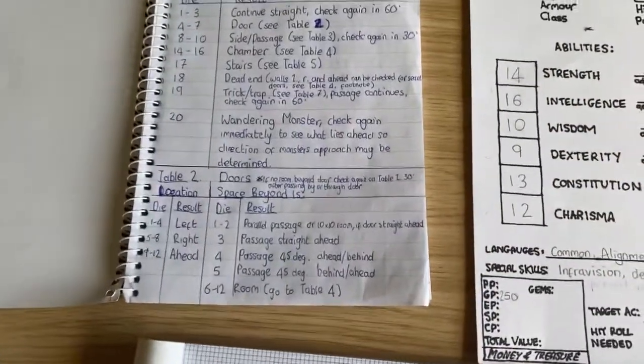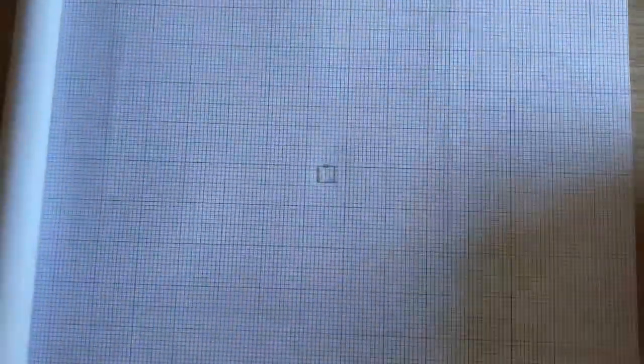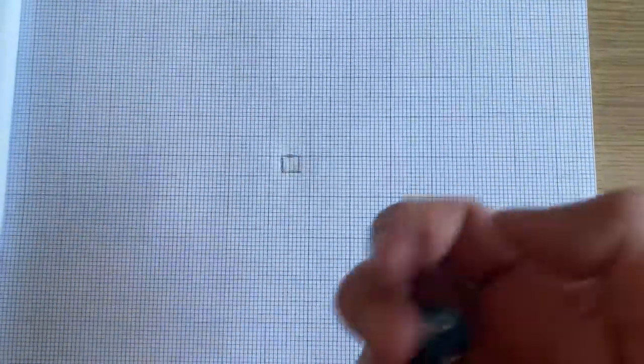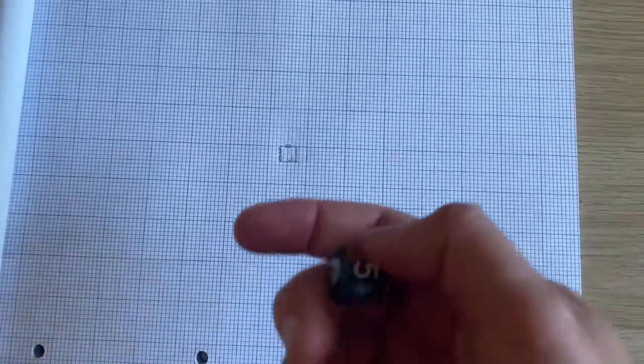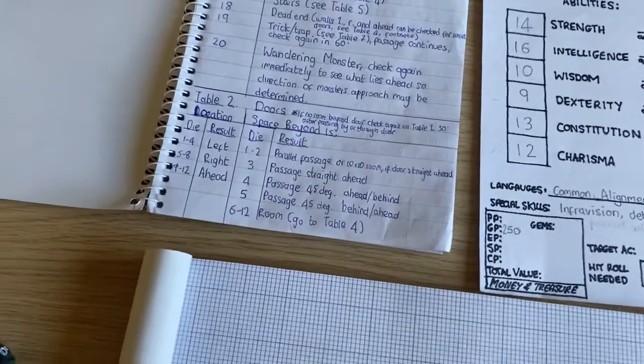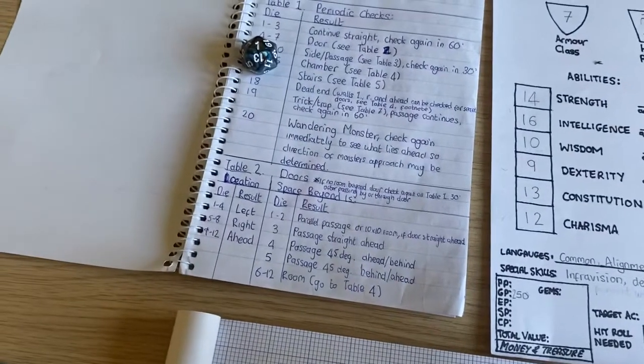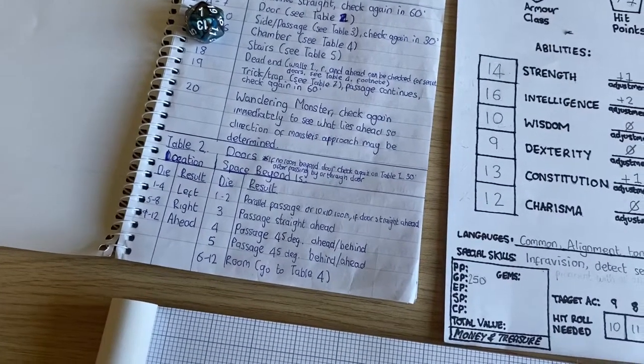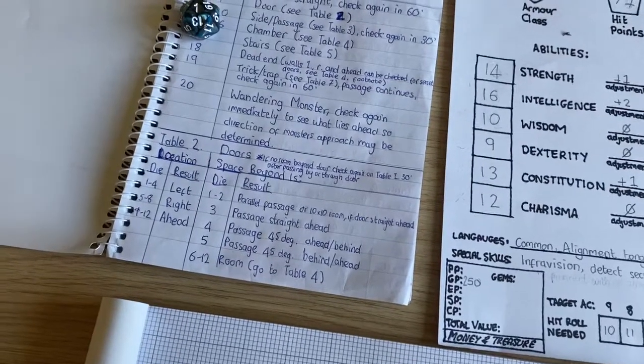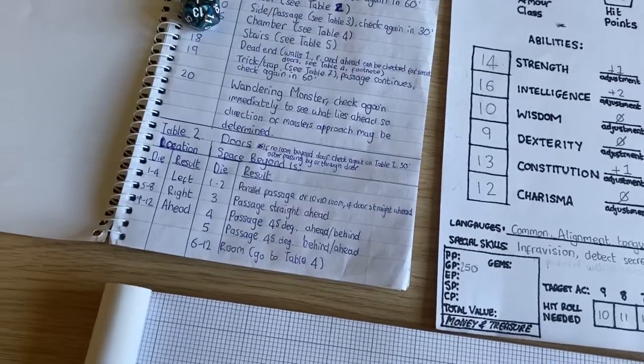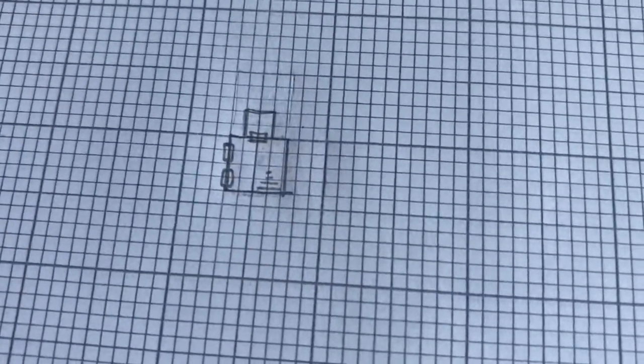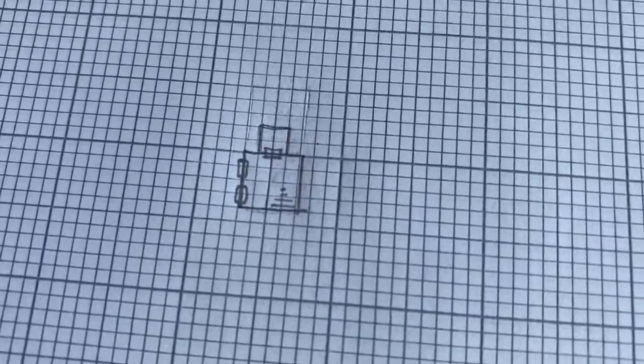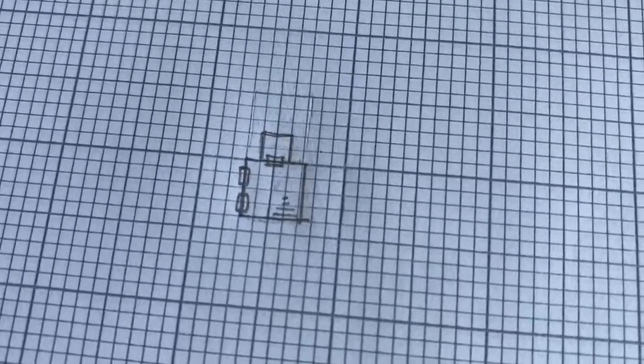I've decided I'm going to go north, so I'm going to try and force open the door to the north. I need to roll a 5 or a 6 on a six sided die to successfully force open the door, and I did it straight away. Next I'll determine the space beyond the door by rolling a 12 sided die, and I got a 1. That means beyond the door to the north is a parallel passage or a 10 foot by 10 foot room if the door is straight ahead, and the door is indeed straight ahead, so I've rolled a 10 foot by 10 foot room. I've forced open the door to the north and entered a 10 foot by 10 foot room, and that room is empty. There's no exits in it.